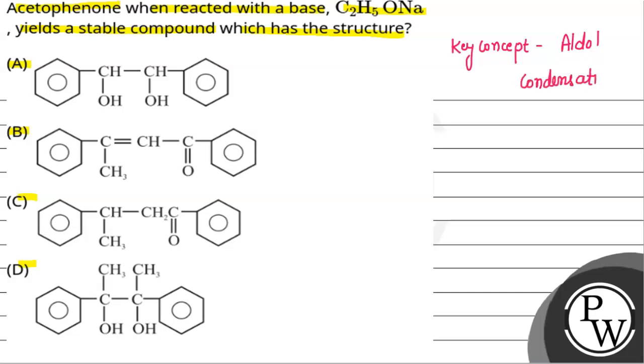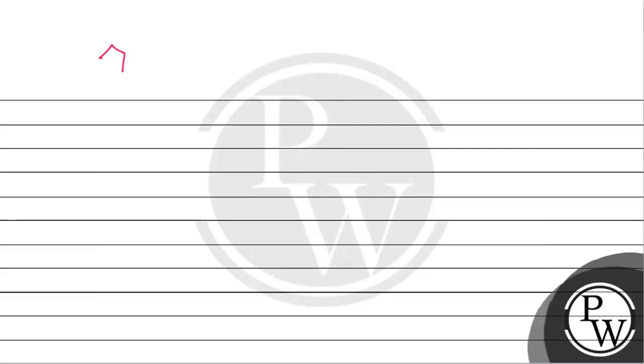In this compound, aldol condensation will occur in the presence of base. Why will it occur? If we draw acetophenone's structure, we have C double bond O and CH3. The carbonyl group has an alpha carbon, and this alpha carbon has 3 hydrogens present.